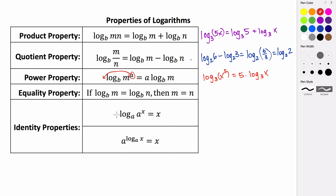The identity properties: the first says if you have a log base a, and the base of your argument is the same as the base of your log, then that log evaluates out to be just the power of your argument. So log base a of a to the x is equal to just x.